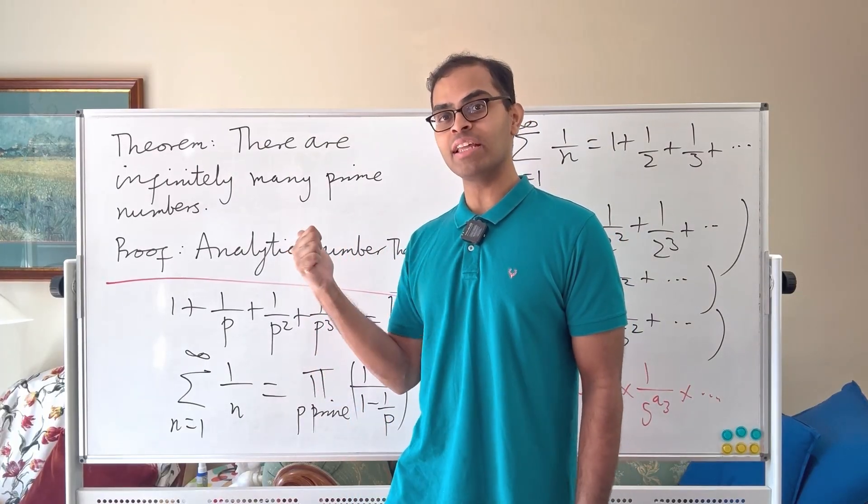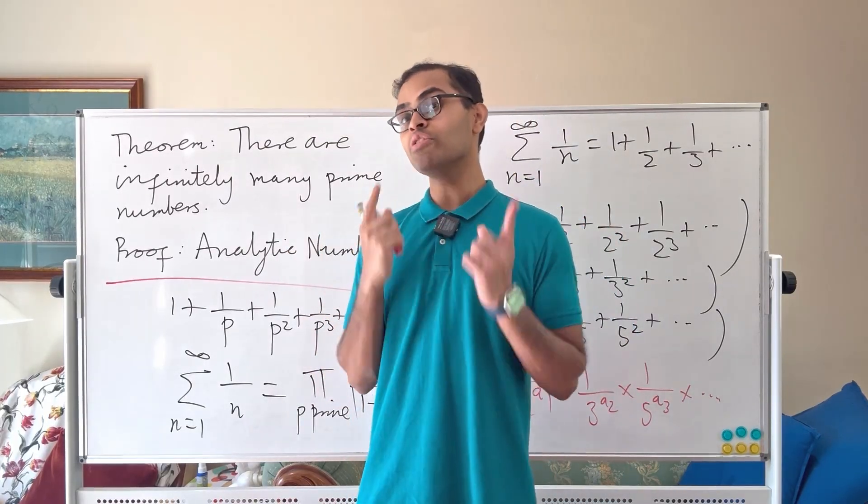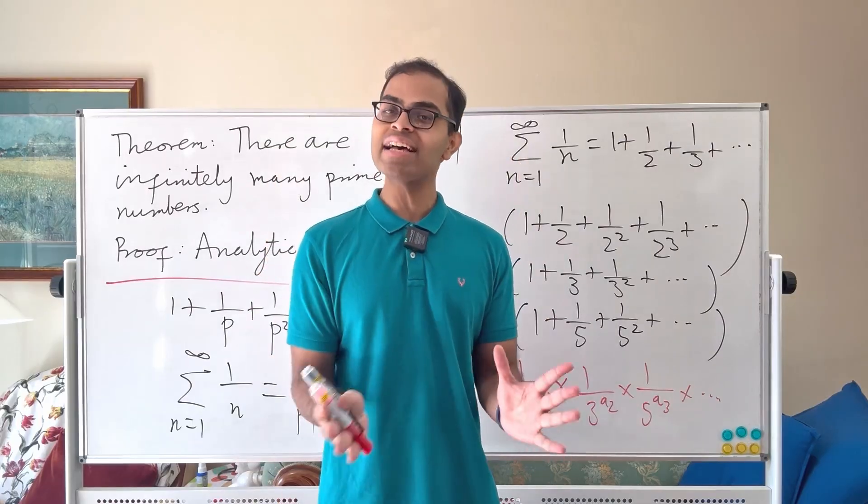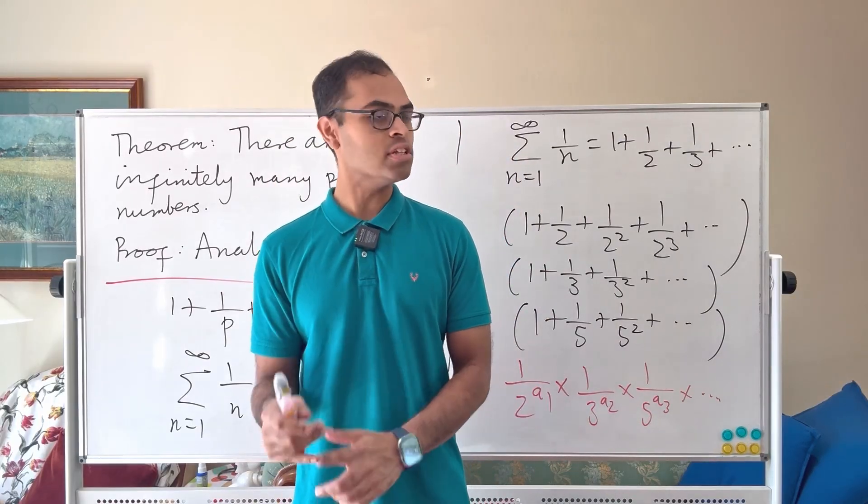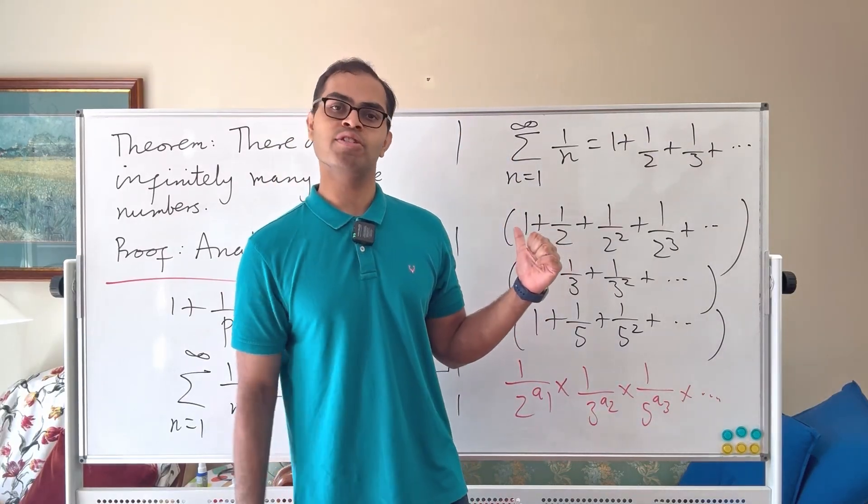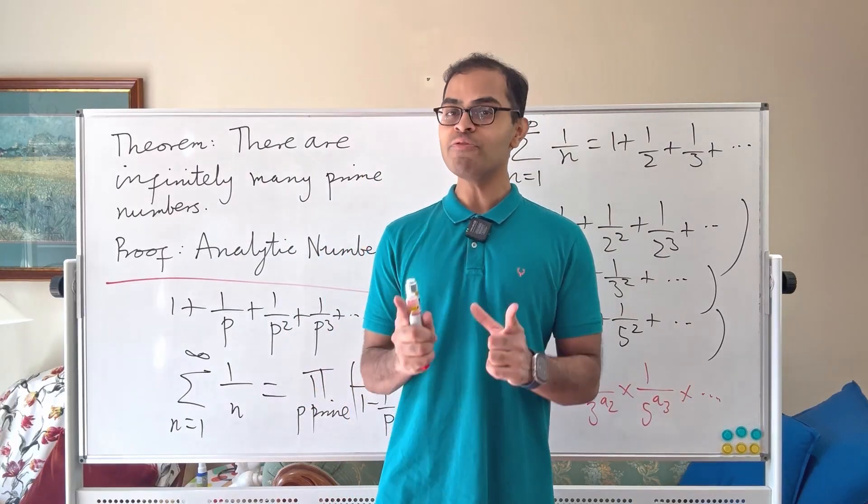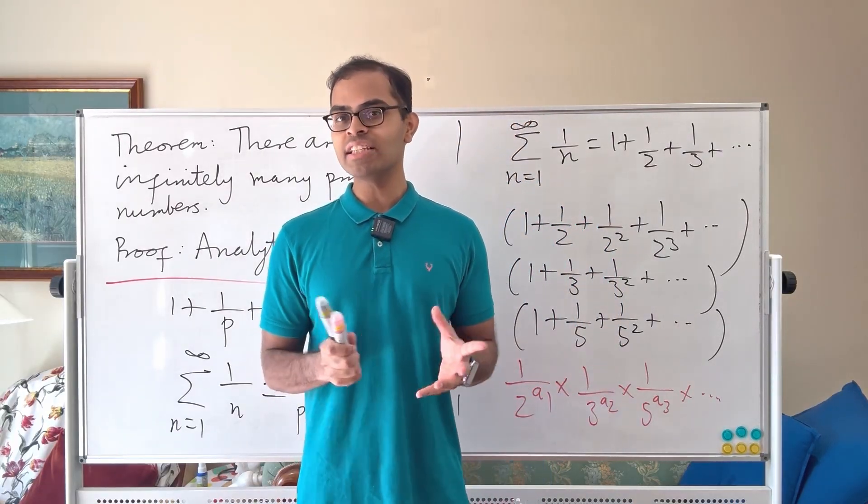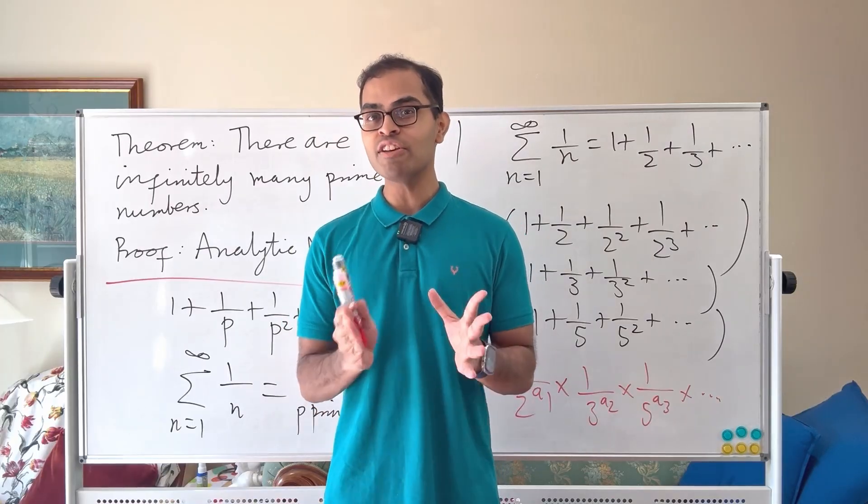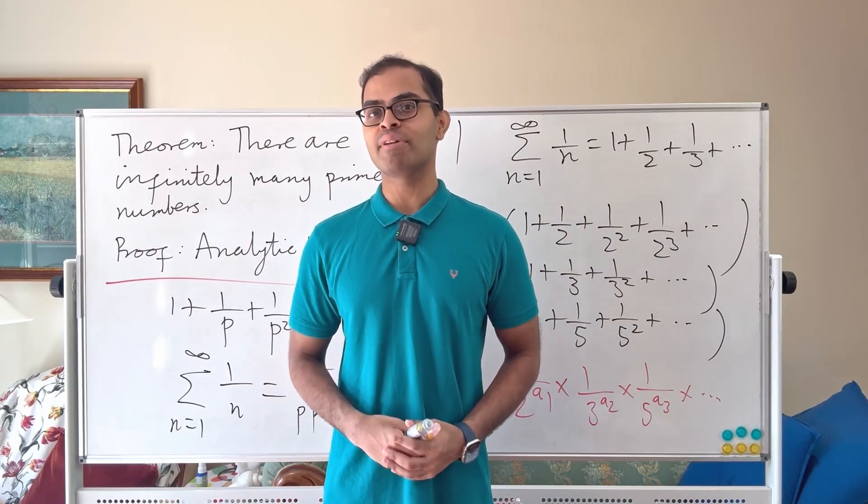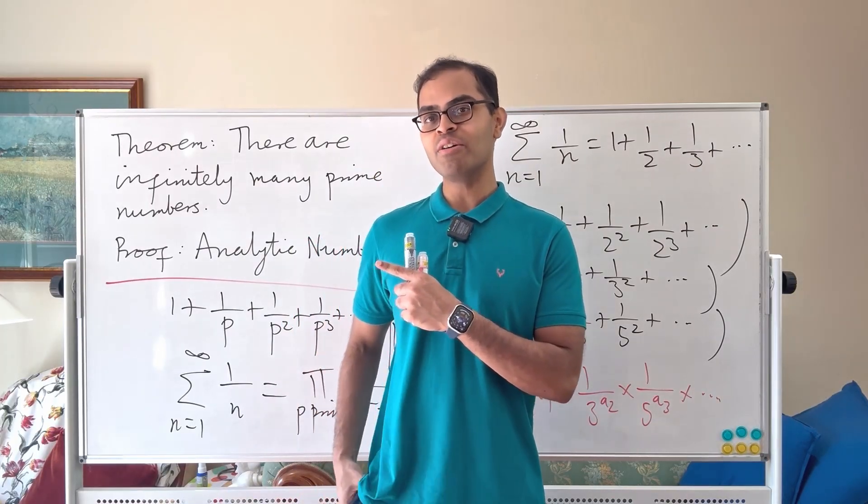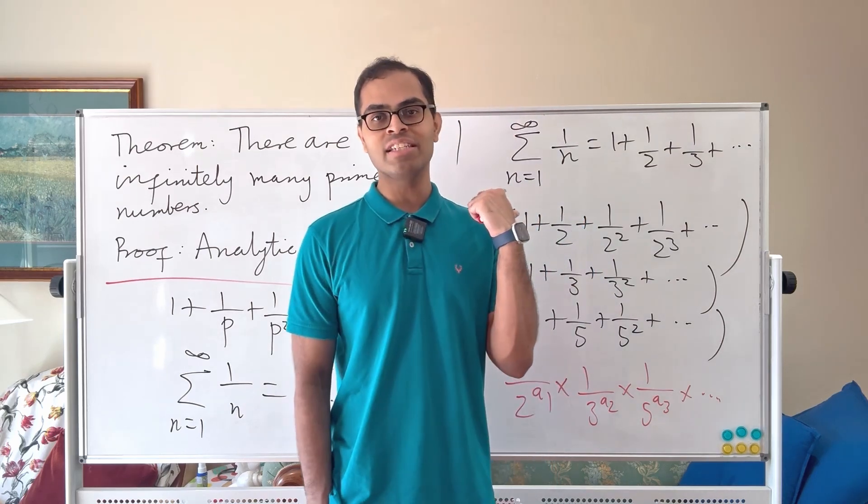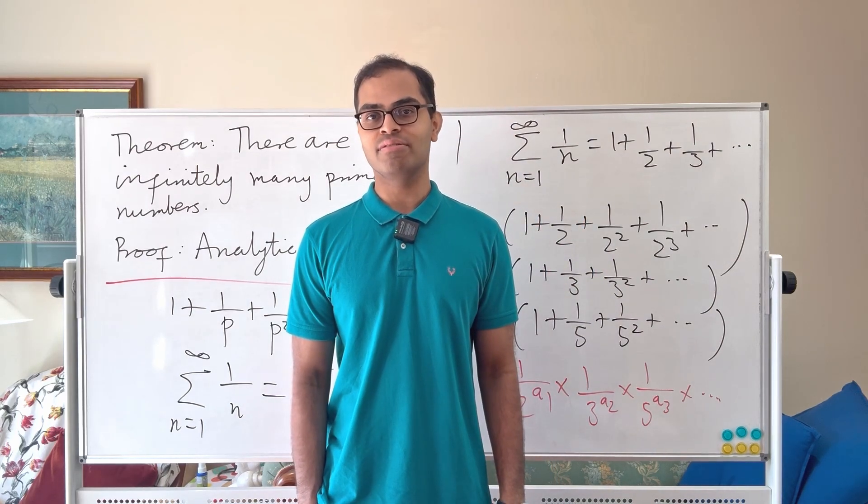That's going to complete the proof that there are infinitely many prime numbers. If you want to see Euclid's original proof done as Euclid did it, exactly as Euclid did it, another video is going to pop up on your screen here. I'm going to see you there. Don't forget to hit that like and subscribe button and if you're really enjoying my content please consider subscribing on Patreon. There are exclusive perks and it makes a huge difference to my channel. I'm going to see you in that video to complete this proof of why the harmonic series diverges. Have a great day and I'll see you soon.